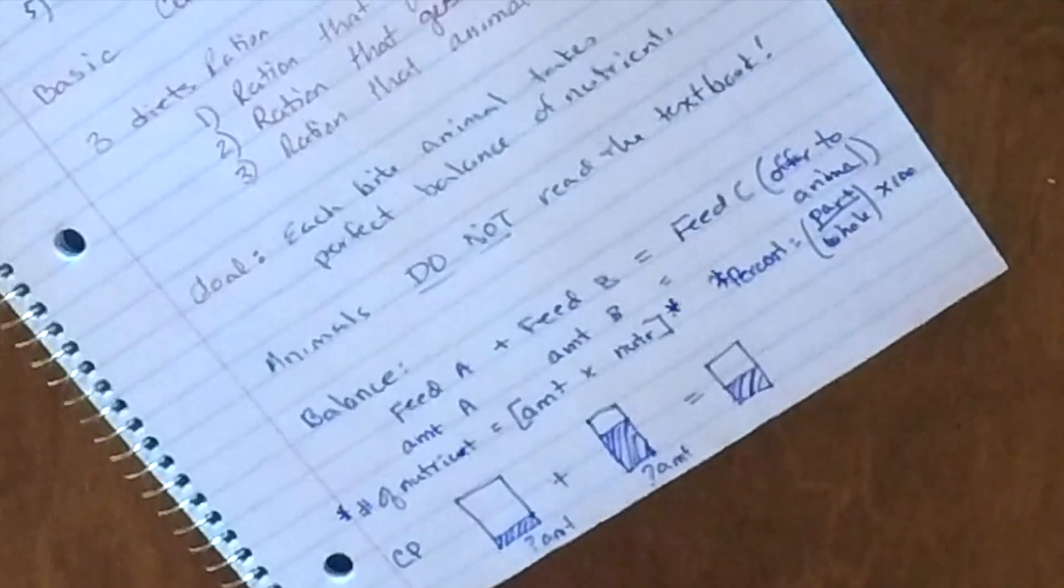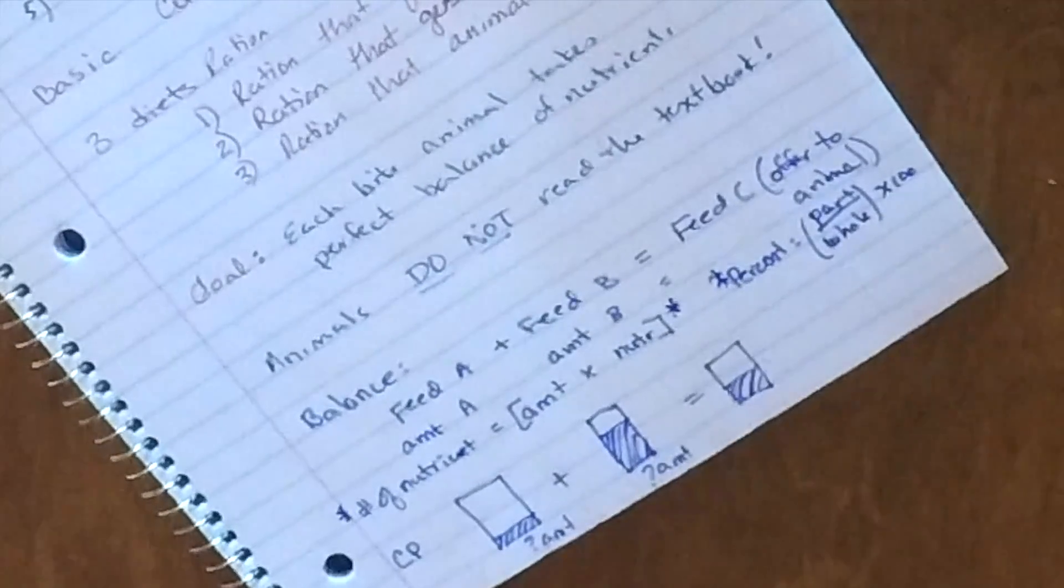So with that, I'm going to end this video here. And so this was kind of that overview to the basic concepts of ration formulation. And the next video that's going to be helpful is the actual Pearson Square video.